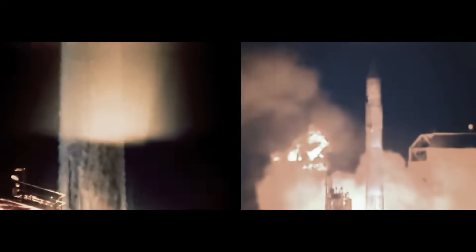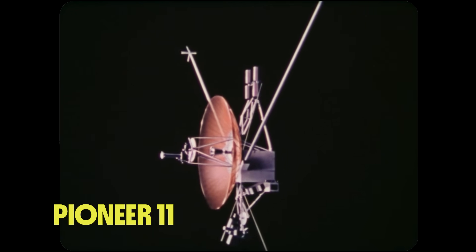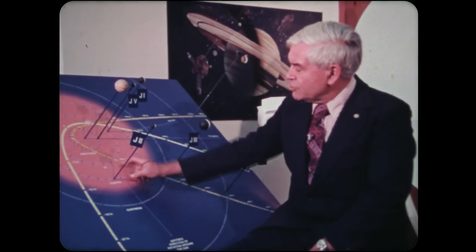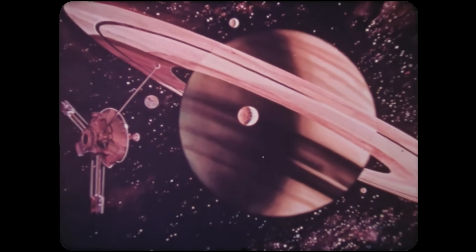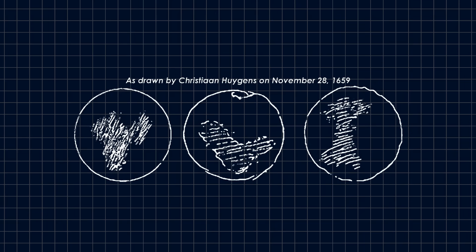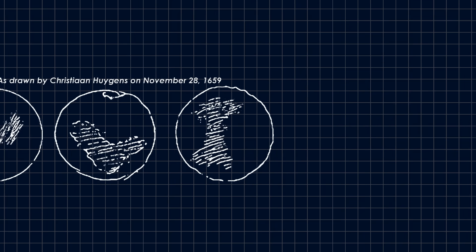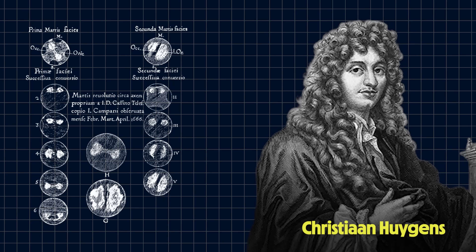Our first close encounter with Titan came in 1979, when NASA sent a robotic spacecraft named Pioneer 11 to visit the planet Saturn for the first time and investigate the rings and moons that surround the gas giant. We've known about the existence of Titan for centuries. It was officially discovered in 1655 by the Dutch astronomer Christian Huygens.